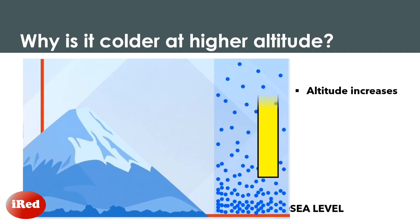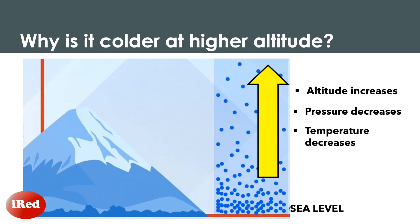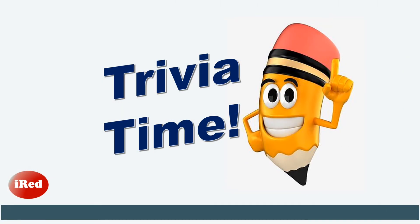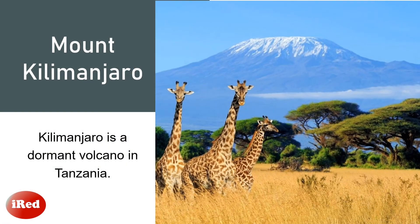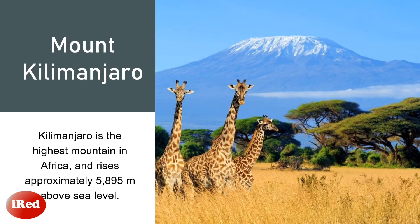Therefore, as the altitude increases, the air pressure decreases, and consequently the temperature also decreases. Do you know Mount Kilimanjaro? Kilimanjaro is a dormant volcano in Tanzania. It is the highest mountain in Africa and rises approximately 5,895 meters above sea level. Mount Kilimanjaro has very different climates at the top and bottom.